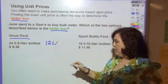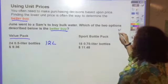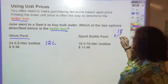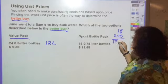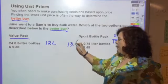So for $9.36, 18 0.75-liter bottles is 18 times 0.75, which is 13.5. So we've got 13.5 liters here.